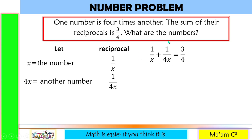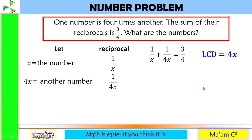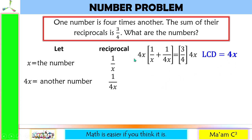To solve this, we look for the LCD. The LCD of x and 4x is 4x. I'll teach you a shortcut: multiply both sides by the LCD, which is 4x. So 4x divided by x cancels out, leaving us with 4 times 1, which is 4.